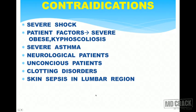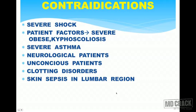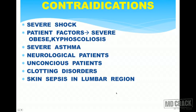Advantages over general anesthesia: protection from stress response; spontaneous respiration is maintained, avoiding complications of controlled ventilation; proper analgesia, relaxation, and contracted bowel for the surgeon; suitable for asthmatics, bronchitis, emphysema, and patients with allergy to muscle relaxants. Contraindications include: severe shock if not properly pre-hydrated, obesity, kyphoscoliosis, severe asthma, neurological disease, unconscious patients, clotting disorders, and skin sepsis in the lumbar region.